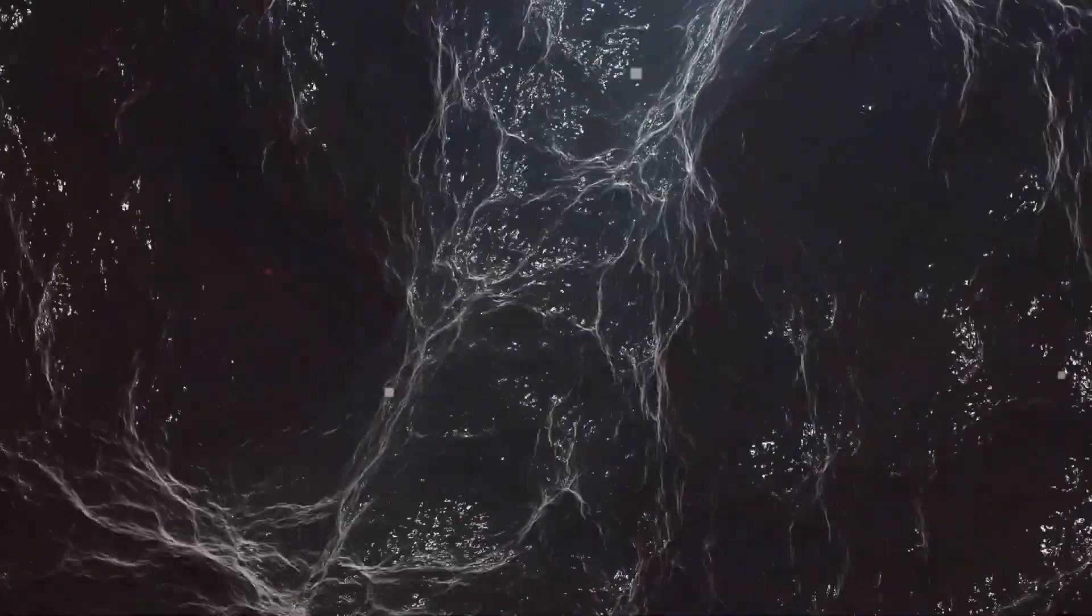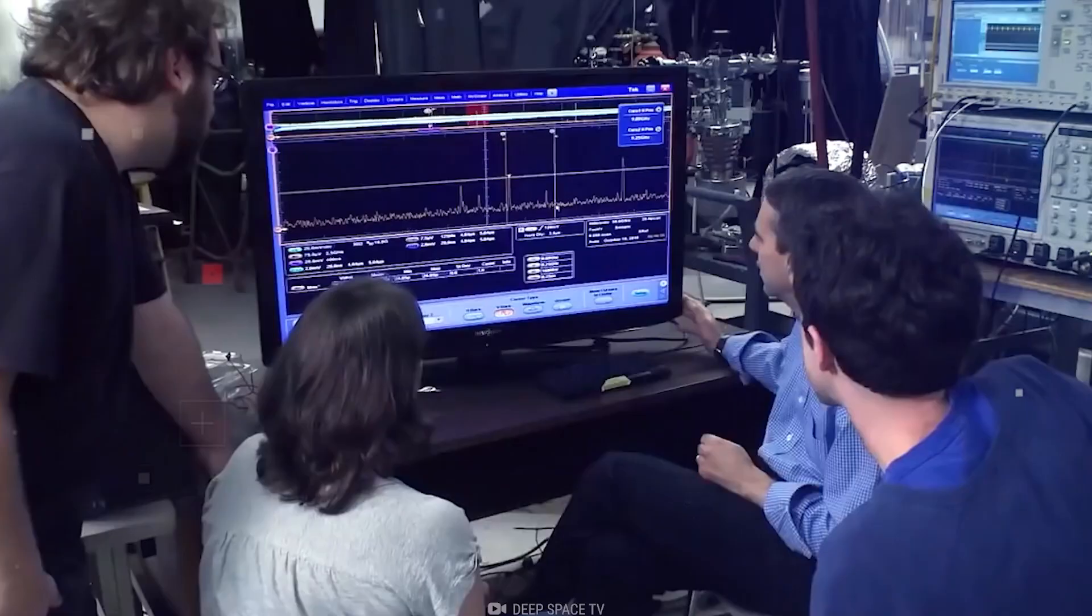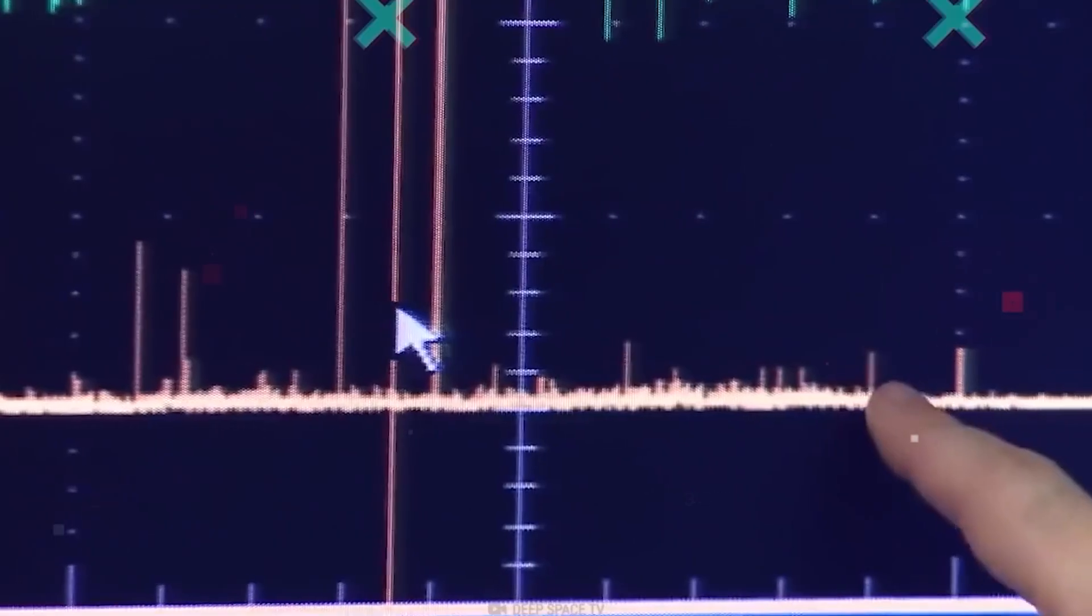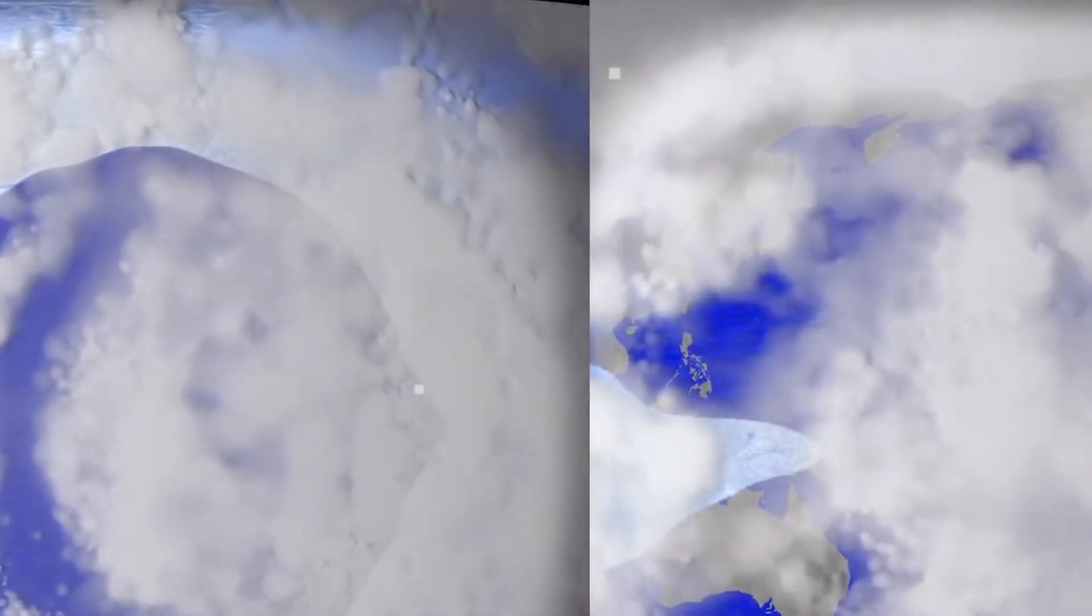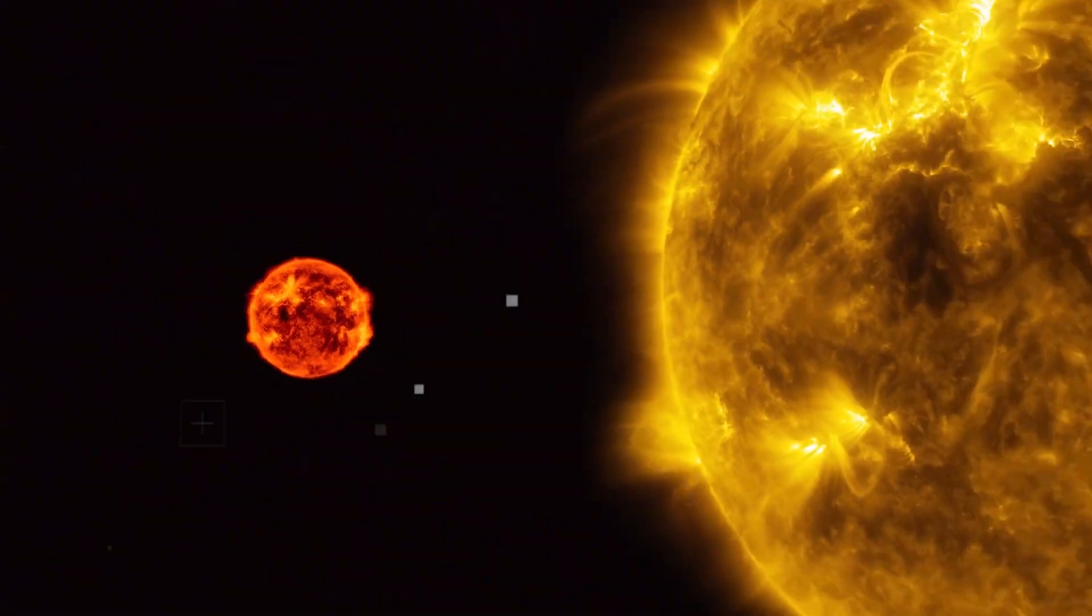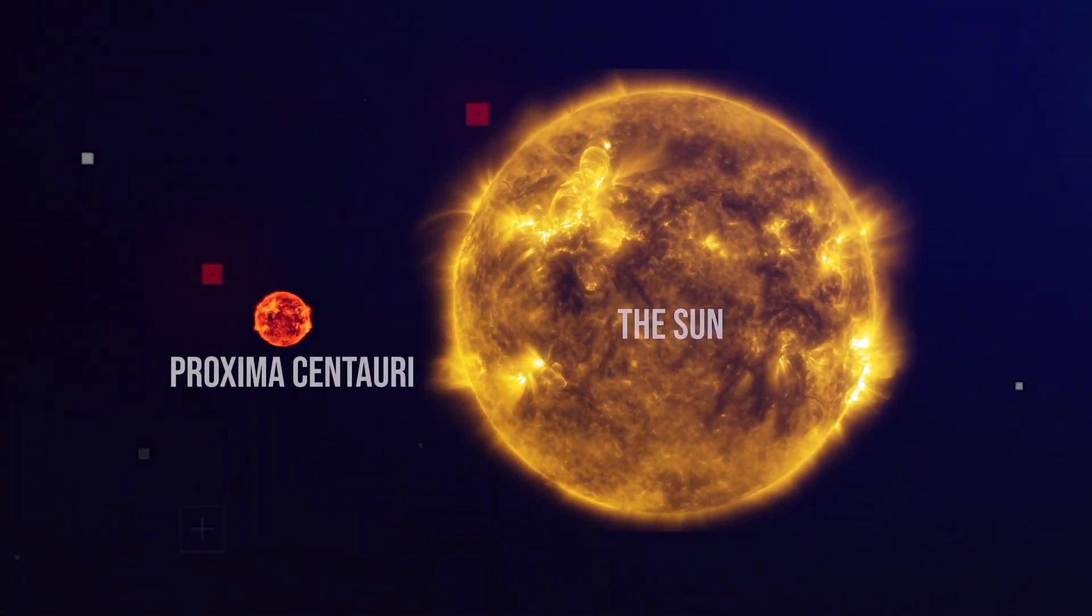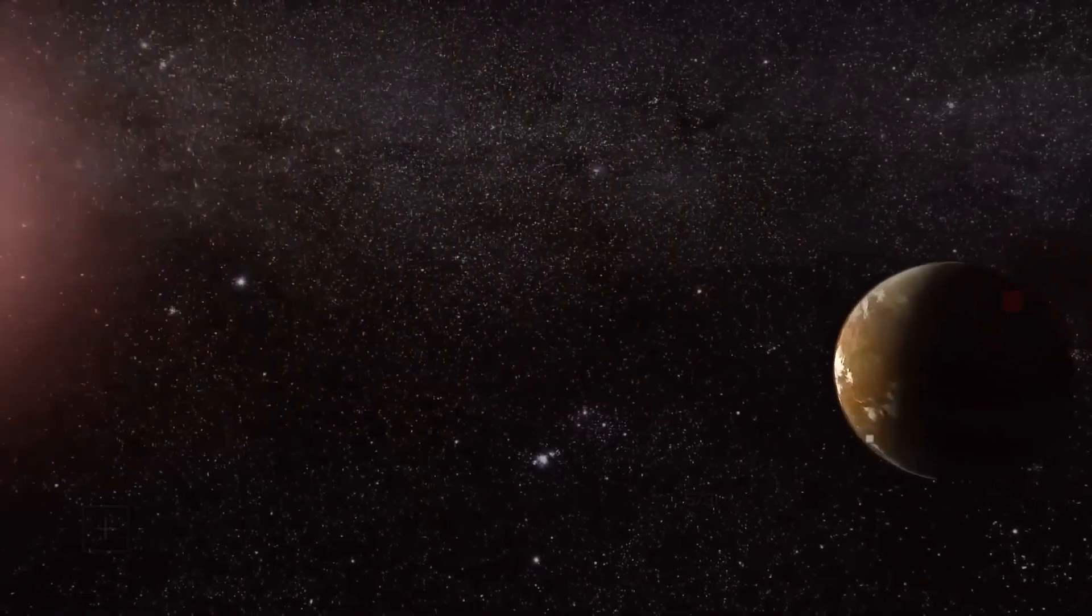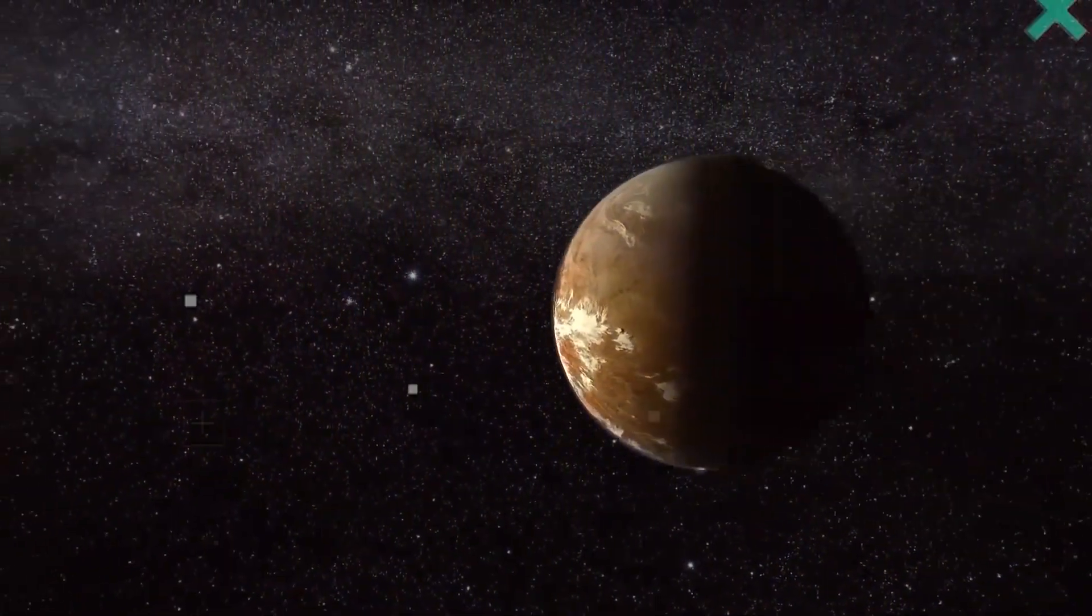Scientists are particularly interested in detecting signs of water vapor or other gases that could hint at the presence of an atmosphere conducive to life as we know it. Proxima Centauri, a red dwarf star cooler and smaller than our sun, casts a dim glow over Proxima b.